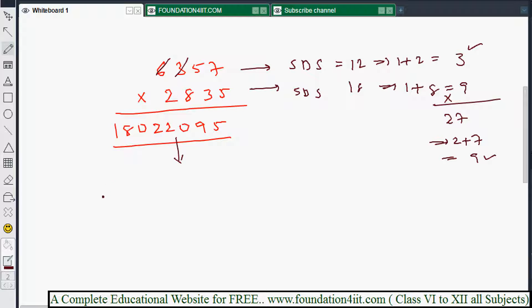It takes just 5 seconds. Now for the solution, find the SDS of the product. Whenever the sum is 9, you can strike over. 1 plus 8 is 9, strike it. 2 plus 2 is 4, 4 plus 5 is 9. You got 9 here and 9 there, so the answer is correct because SDS is tallied for both.